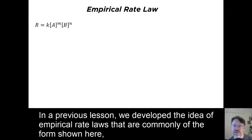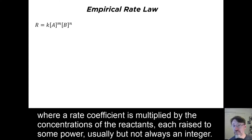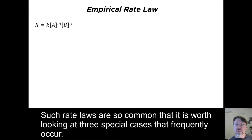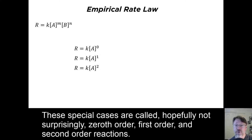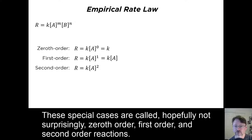In a previous lesson, we developed the idea of empirical rate laws that are commonly of the form shown here, where a rate coefficient is multiplied by concentrations of the reactants, each raised to some power, usually but not always an integer. Such rate laws are so common that it is worth looking at three special cases that frequently occur. These cases all just have a single reactant in the rate law, raised to a different integral power. These special cases are called zeroth order, first order, and second order reactions.